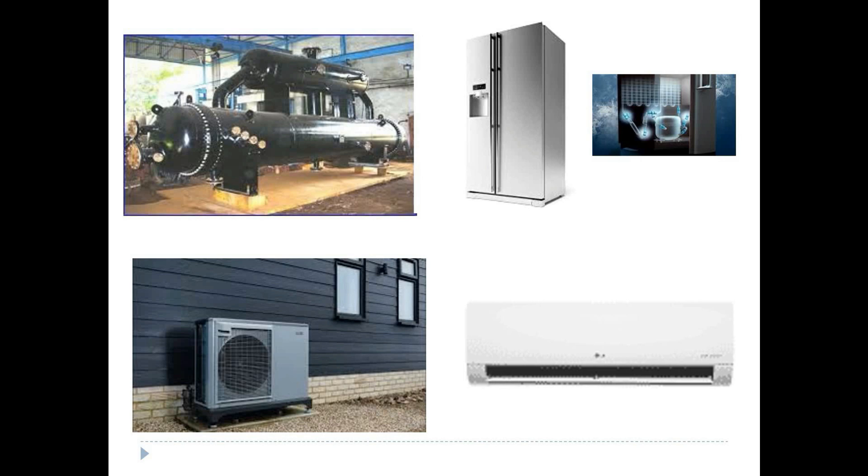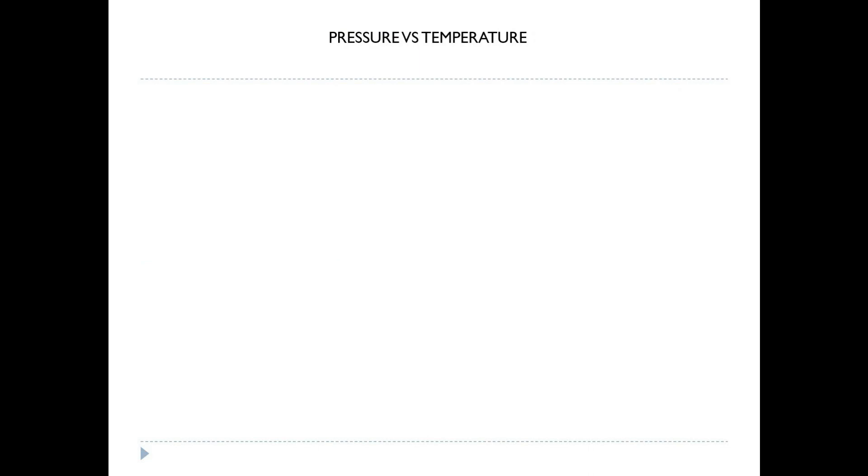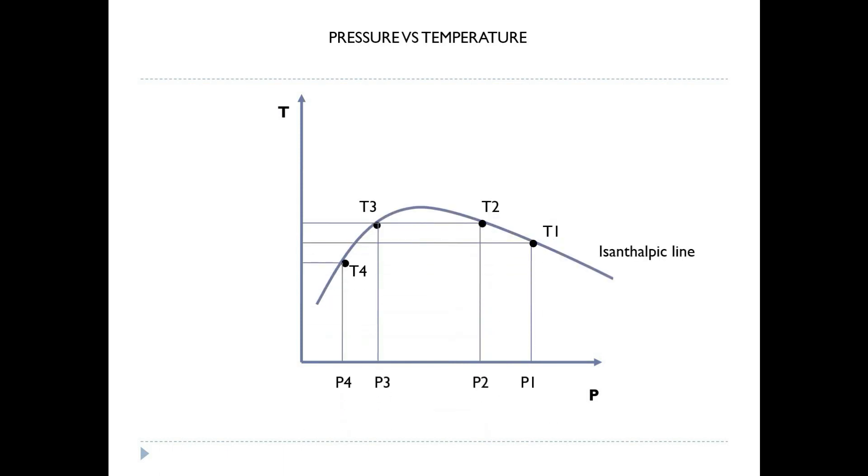Now, let us understand how this pressure change affects the change in temperature. For this, Joule-Thompson has plotted a graph between pressure and temperature. Here, P1 is the highest pressure. In the graph, as you can see, if the gas is compressed from P1 to P2, you may notice rise in temperature. That is, T2 is higher than T1.